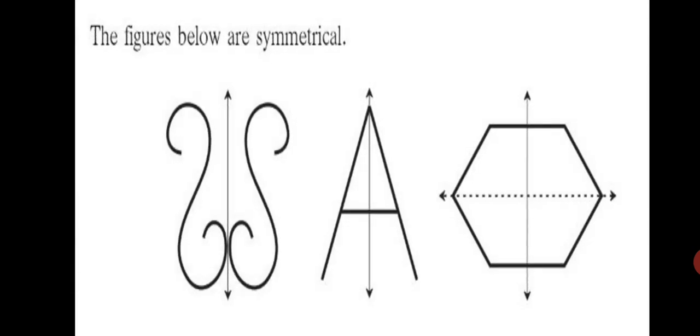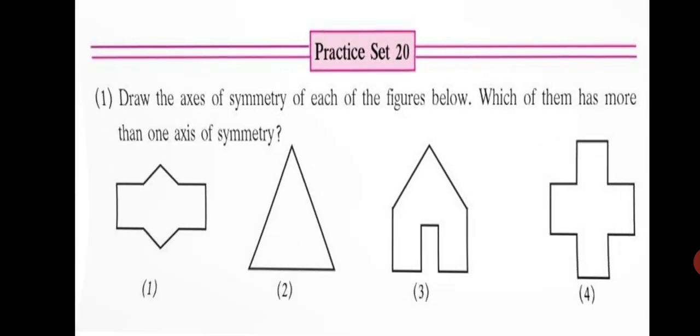The figures below are symmetrical. You can see the axis of symmetry and to the left and right there is an image. If you fold the paper on the axis of symmetry, the image will fall exactly on each other. The first, second and third figure shows symmetrical figures. So, let's move on to practice set 20.